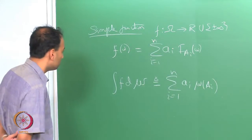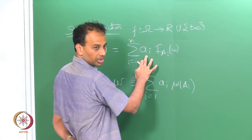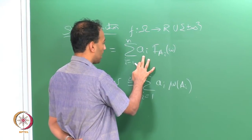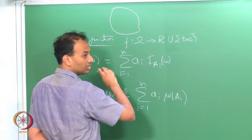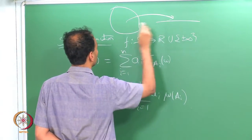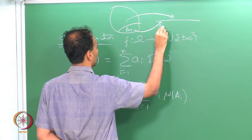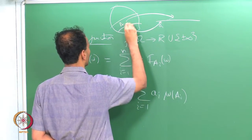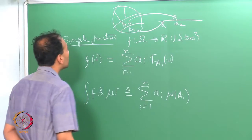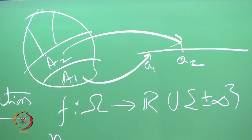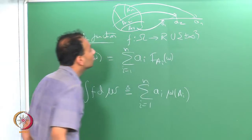Note that a simple function, if written in its canonical representation, always partitions the sample space into n parts. So if that is my omega and that is my R, one part may correspond to A_1 and all of it will map to some value a_1, that may be A_2 and will correspond to some a_2, and so on. This function partitions the sample space into n partitions.